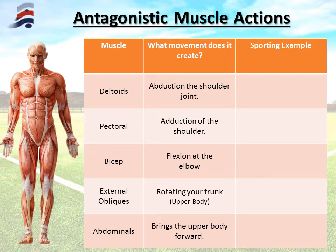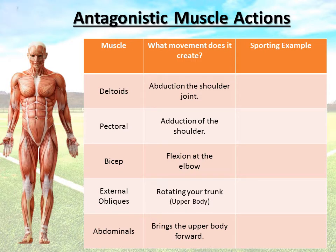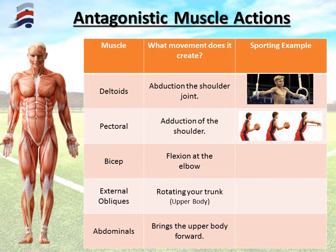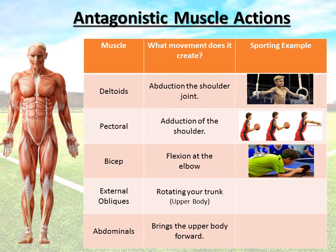Now we know the names and locations, it's important to know what movement each muscle creates when it contracts or pulls — many of these words will be familiar from the joint presentation. The deltoids, located in the shoulder area, allow abduction of the shoulder — moving the arm away from the body. An example is the Maltese cross on gymnastics rings. The pectorals, at the front of the chest, allow adduction of the shoulder — such as catching a basketball and bringing your arms into your chest. The bicep allows flexion at the elbow, like serving in table tennis.